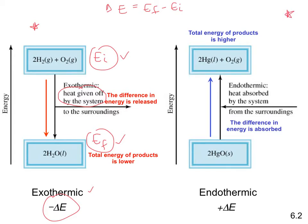On the right-hand diagram, the energy of the reactants starts out lower, and the energy of the products is actually larger. Subtracting E initial from E final gives an overall positive delta E. In this case, energy has not been released — we get a positive delta E, and this is called an endothermic reaction, meaning heat has been absorbed by the system.